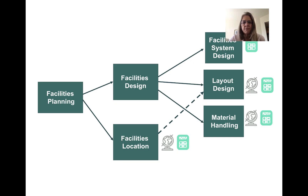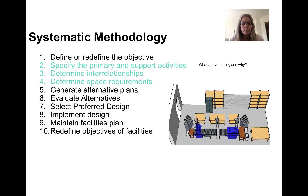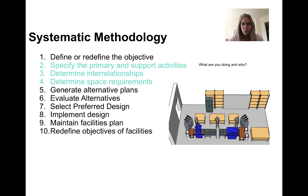In the process of doing a facility design, you need to collect and document data. In fact, some companies have many of the charts and diagrams already documented, which will aid your designing process. We're going to cover three processes after you've defined the product and the objective of the facilities redesign or design — using charts and diagrams to help you understand the primary support activities, the interrelationships between departments, and the space requirements.